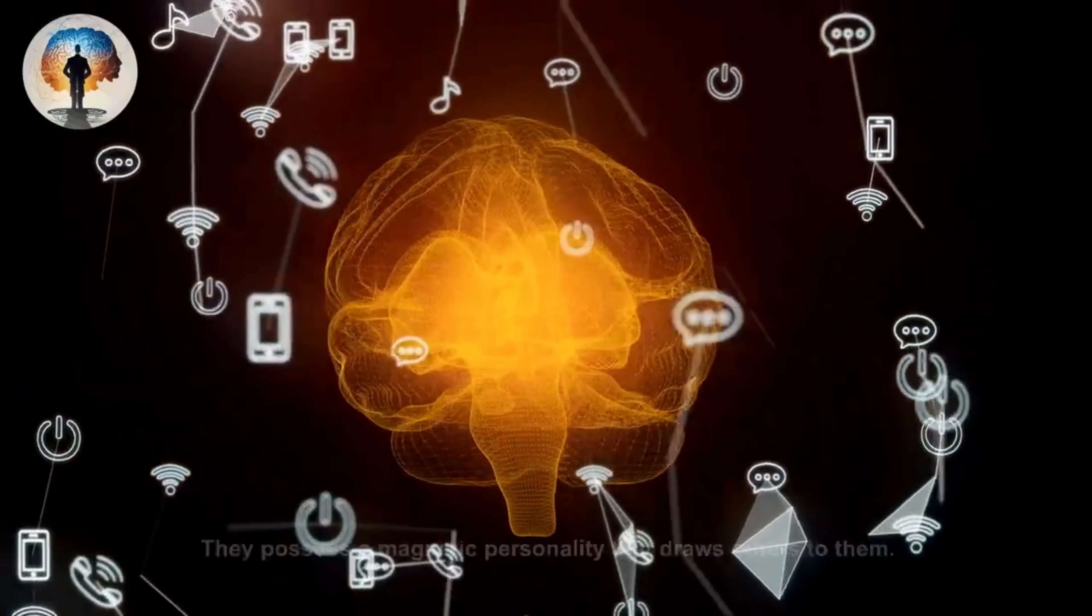Adaptive and flexible: sigma males are adaptable and flexible in various situations. They don't feel the need to assert their dominance or seek recognition, allowing them to navigate different social contexts with ease. Thoughtful communication: communication for sigma males tends to be thoughtful and deliberate. They prefer meaningful conversations over small talk, often sharing insights and ideas in a calm and measured manner.